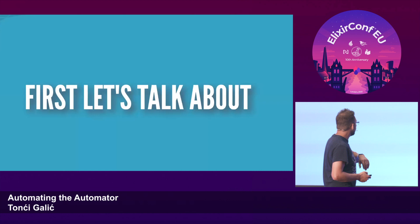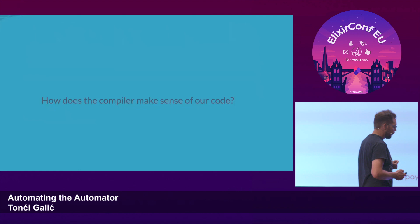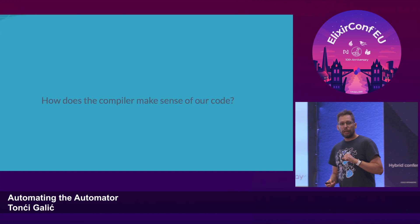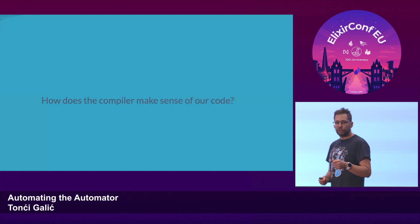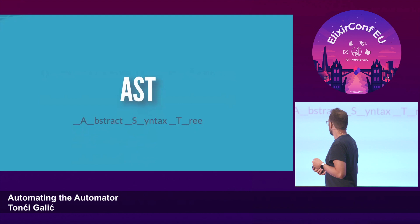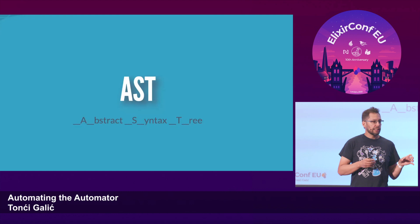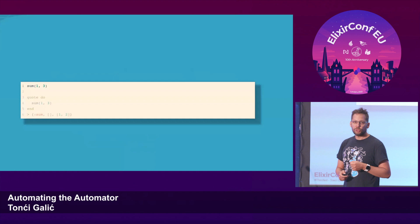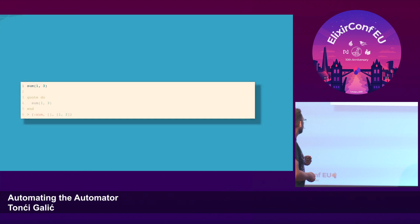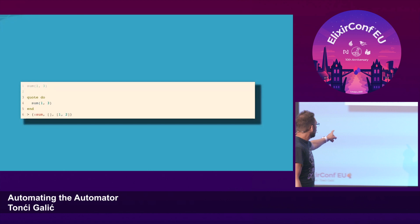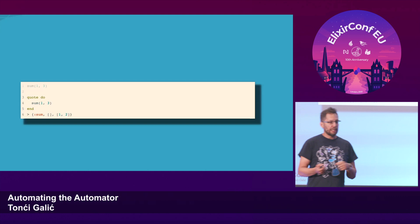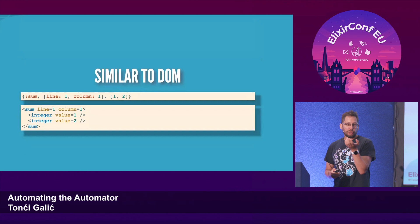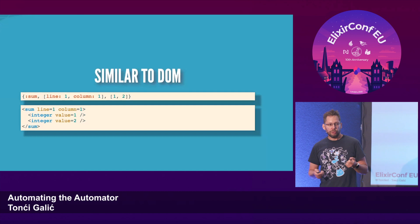How does the compiler actually make sense of our code? The compiler takes our source code, parses it into separate tokens — words, so to speak — and then builds up an abstract syntax tree, which is basically an Elixir data structure representation of our source code. For example, if we have the function `sum` with parameters 1 and 3, you can use the `quote` function to get the AST from that, and you get a three-element tuple with the name of the function, metadata, and actual parameters. If you're a web developer, it's similar to a DOM, and we can do DOM manipulations.